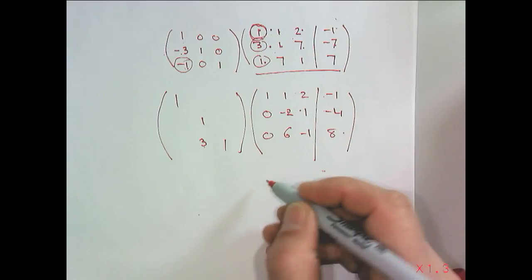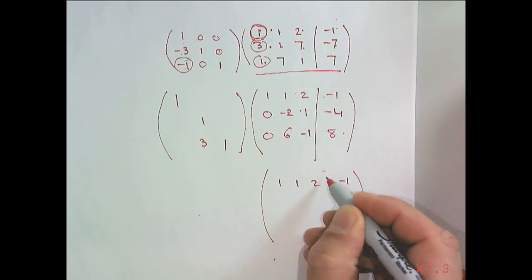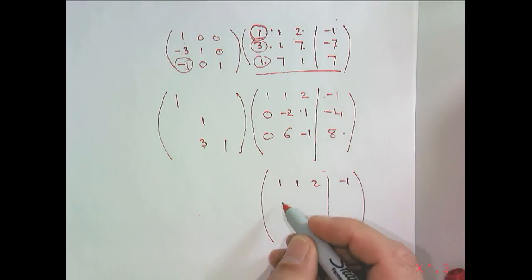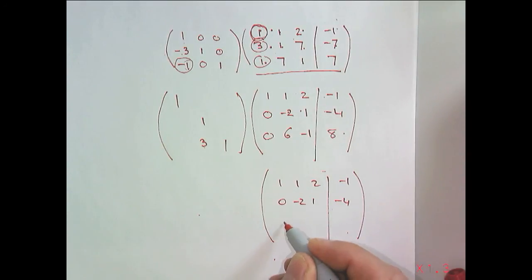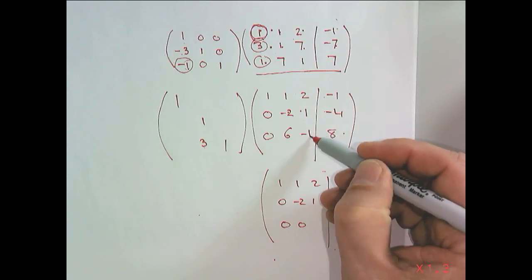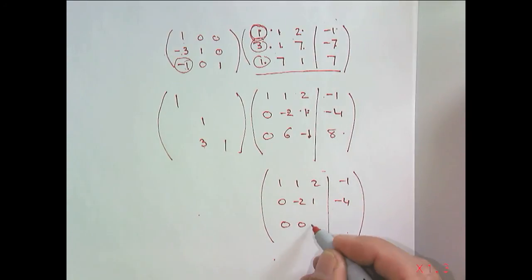Then if you multiply that out, you leave the first two rows alone, and the last row becomes this minus, 3 times that plus that is minus 4.